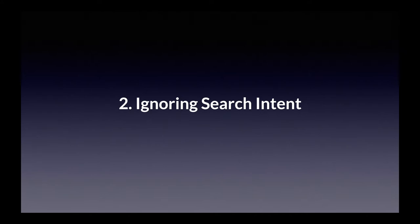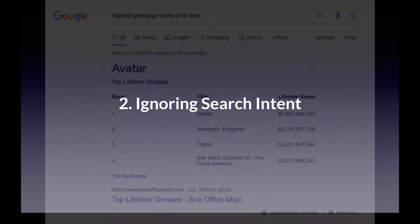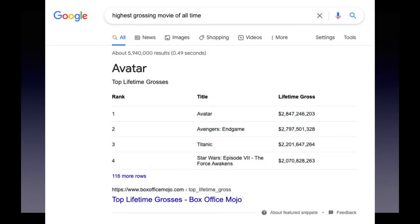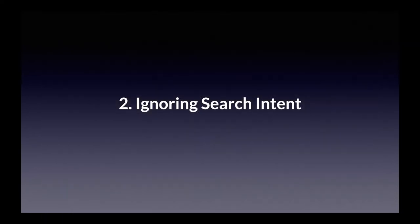Navigational searches are when a searcher types in the name of a website, such as CNN, Amazon, or YouTube — they want to go to a specific website they already know about. An informational search is a search for information, for example 'highest grossing movie of all time.' A transactional search is by someone who wants to buy something, such as 'running shoes for men' or 'wall mounting for TV.' But these three categories are really just the bare bones of search intent — there's much more to it than that.